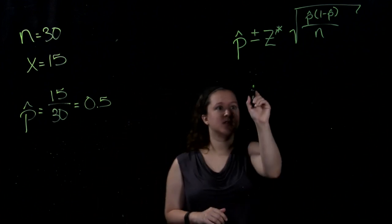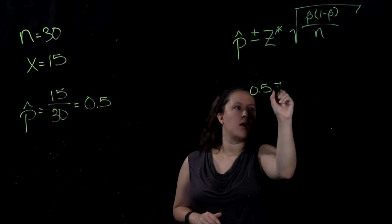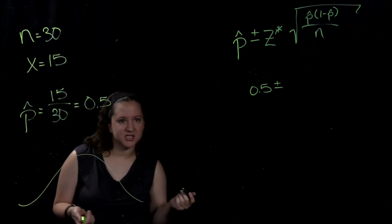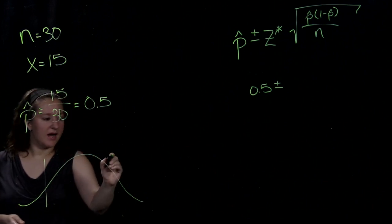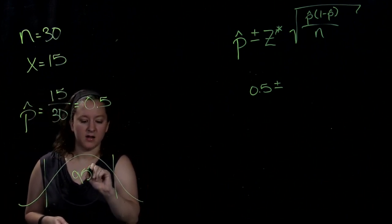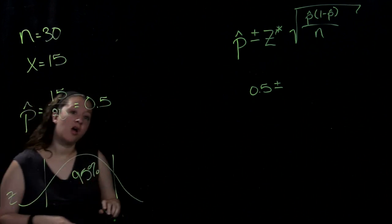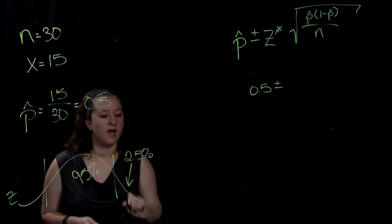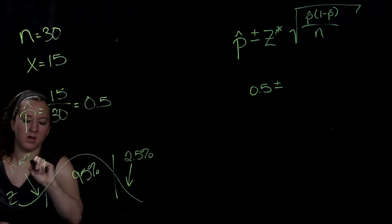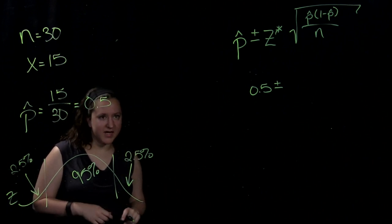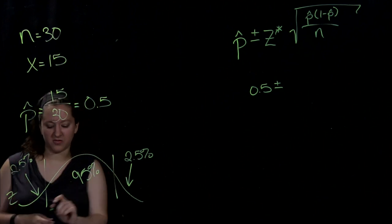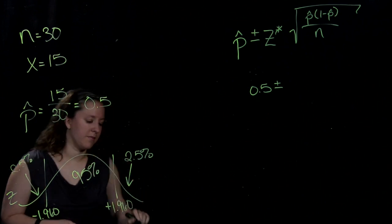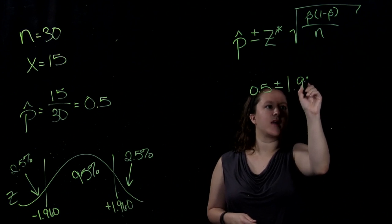You can now plug this into the formula, so p hat is 0.5, plus or minus the z multiplier. You can get this from the z table or using software such as Minitab Express. The z multiplier is the z score that separates the middle 95% of the z distribution from the outer 5%. So the outer 5% is split between two tails, so there's 2.5% at the top and 2.5% at the bottom. This is one of the most common confidence levels, so I can tell you that the z score that separates the middle 95% from the outer 5% is plus and minus 1.960. So our z multiplier is 1.960.